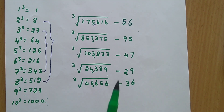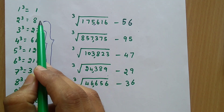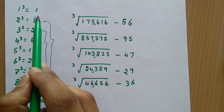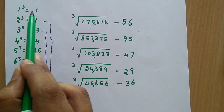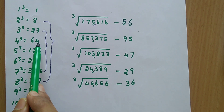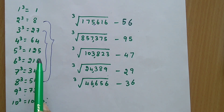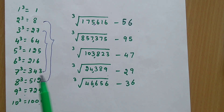Apart from that, if you get any other numbers, you have to write them as they are. So if the last digit is 1, the unit digit is the same: 1. Similarly, if it is 4, 5, 6, 9, or 0, you have to use the same number as the unit digit.